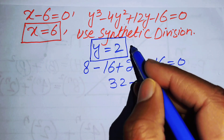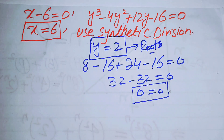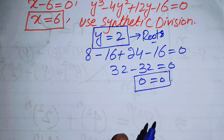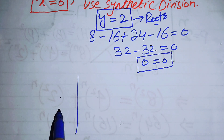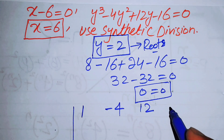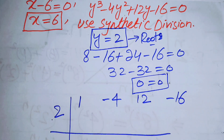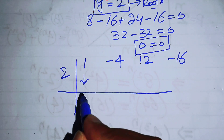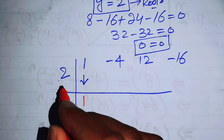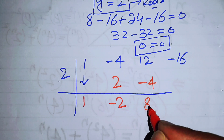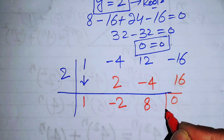We apply synthetic division with root y = 2 and coefficients 1, -4, 12, -16. Bringing down 1, multiply by 2 to get 2; -4 + 2 = -2; -2 times 2 = -4; 12 - 4 = 8; 8 times 2 = 16; -16 + 16 = 0. The remainder is zero.